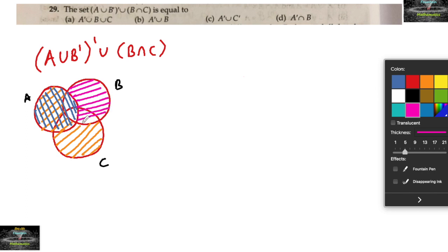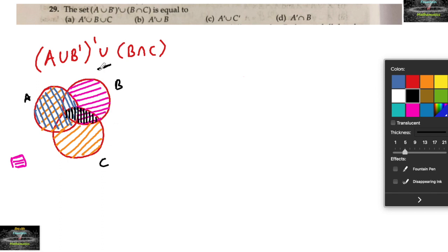Other than the shaded region, this part is (A union B complement) whole complement. And this is now taken union with B intersection C. So B intersection C will be the intersection of B and C. Since it is a union, we take either this pink color shaded part or the black color shaded part.